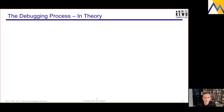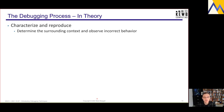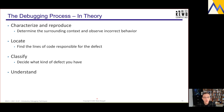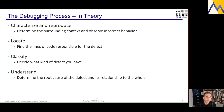So let's talk about my simple debugging process, starting with it in theory. We want to characterize and reproduce a problem — determining the surrounding context and observing incorrect behavior for ourselves. We want to locate the problem: find the lines of code responsible for the defect. We want to classify the problem — understand what kind of defect we've encountered. We want to understand the problem — determine the root cause and its relationship to the system as a whole. And finally, we want to repair the defect so that the incorrect behavior no longer exists.